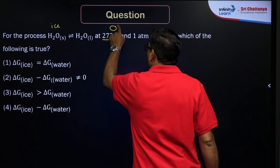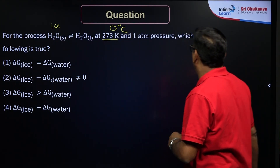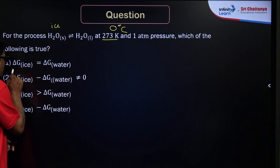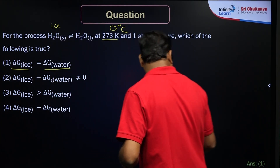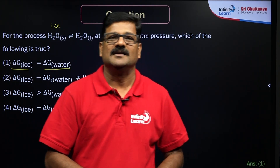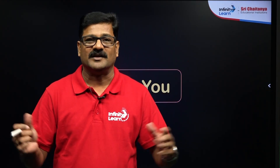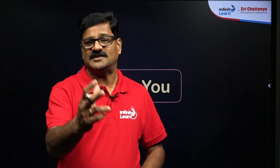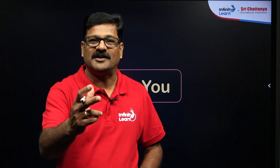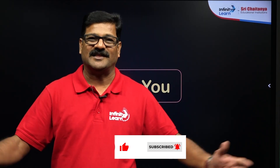Third question: for the process H₂O(ice) → H₂O(liquid) at 273 K (0°C) and 1 atm, there is an equilibrium between the two phases. At equilibrium, the Gibbs free energy of water equals the Gibbs free energy of ice, so ΔG = 0. Today we discussed the second law of thermodynamics, entropy, spontaneity, and Gibbs free energy using the Gibbs-Helmholtz equation. Study well, mention doubts in the comment box, like, share, and subscribe to Infinity Learn NEET channel.